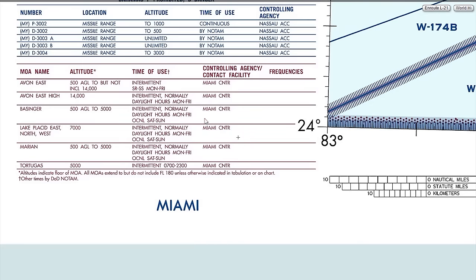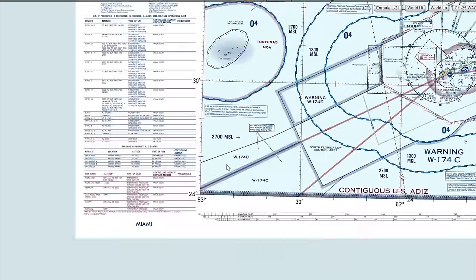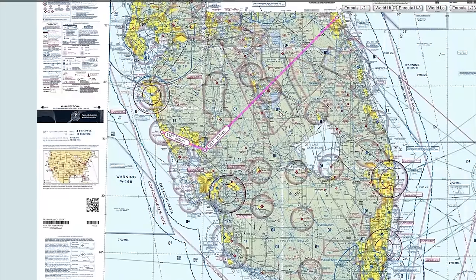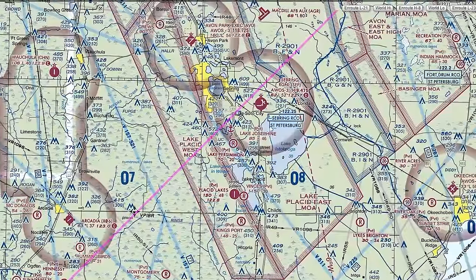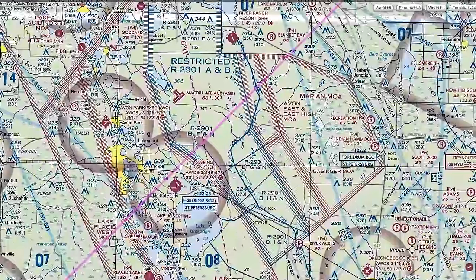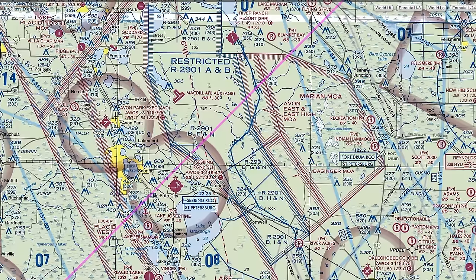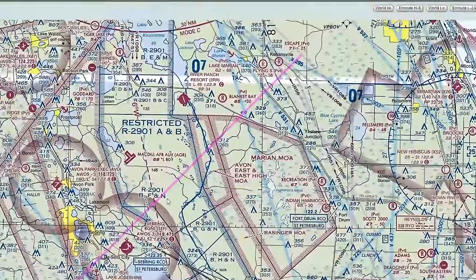If we can't find Miami Center's frequency on the chart, we'd call up Flight Service. It looks like Sebring has an RCO — Remote Communications Outpost — for St. Pete Flight Service, St. Petersburg Radio, on 122.25. We can call them before we get there to make sure the MOA is cold. We don't necessarily need it to be cold to fly through it, but we'd prefer to avoid a hot MOA, though we could technically go through it.